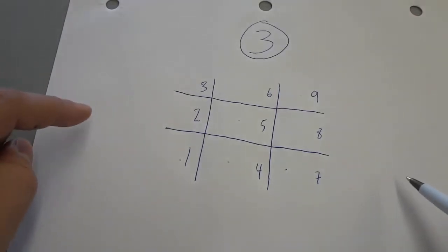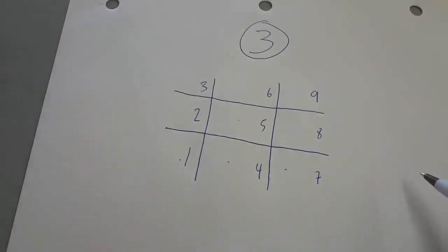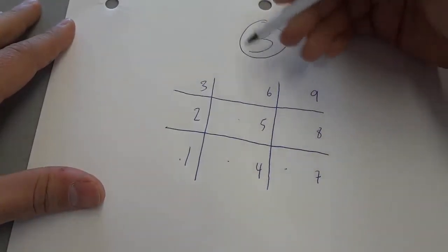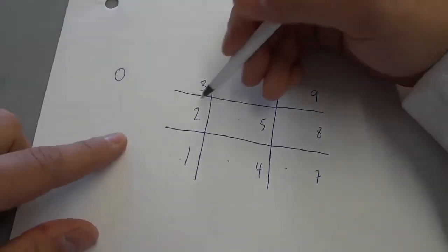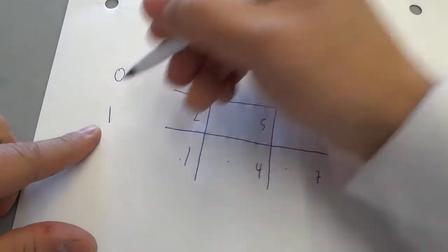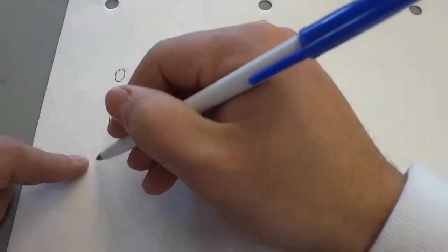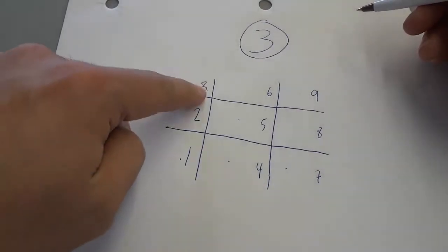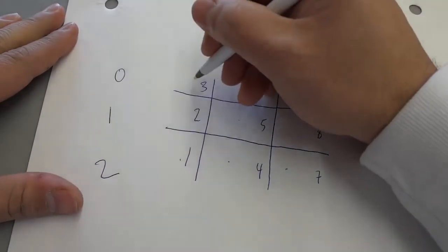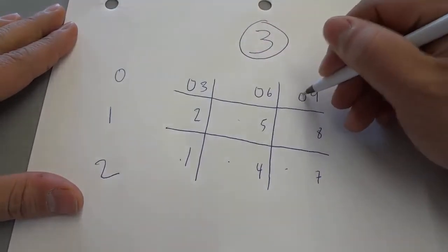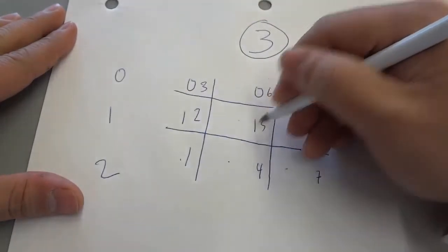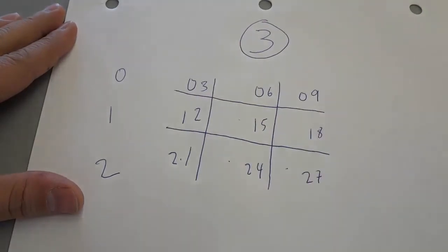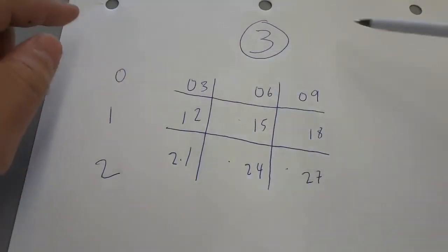Now all that we're going to do is fill in each of the rows with another number. All of the spots in this top row are going to be filled with the number 0, the middle row with 1, and the bottom row with 2. We're going to write these numbers on the left side of each of the numbers we already wrote. So: 0, 0, 0, then 1, 1, 1, then 2, 2, 2. Now what we have written out is our 3 times tables.